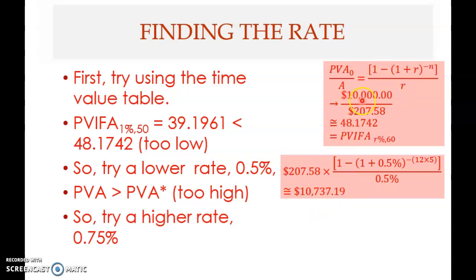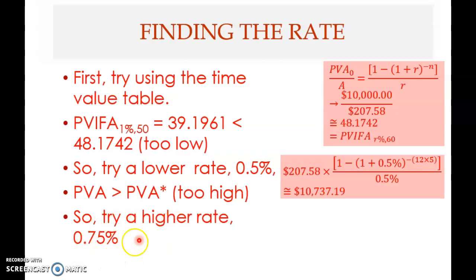At 0.5 percent you get 10,739.19, which is higher than the 10,000 you want. So the present value of annuity computed is higher than the present value of annuity wanted. This means the rate tried is too low, so you need to try a higher rate. Try 0.75 percent — this is what is meant by trial and error.